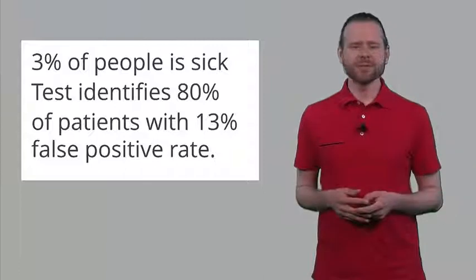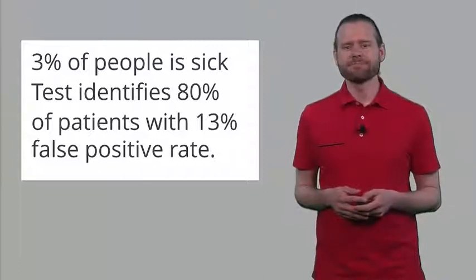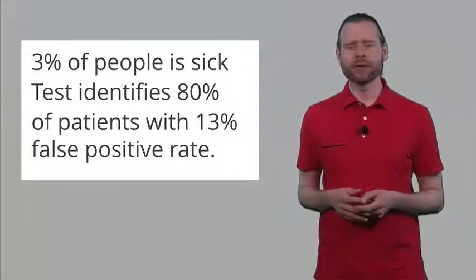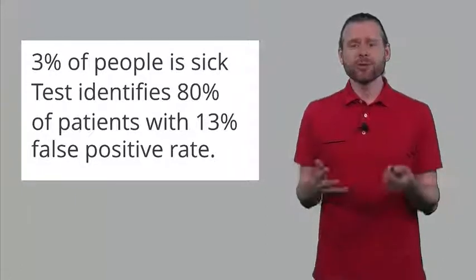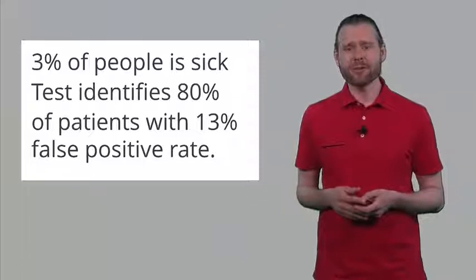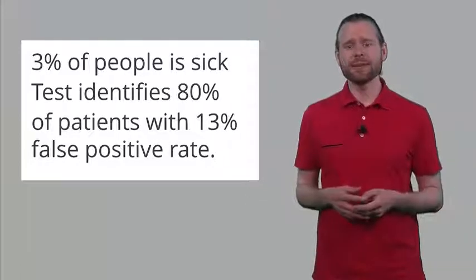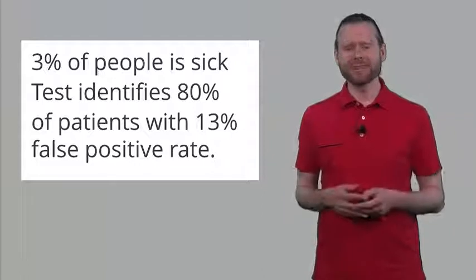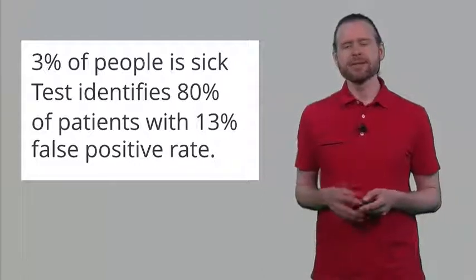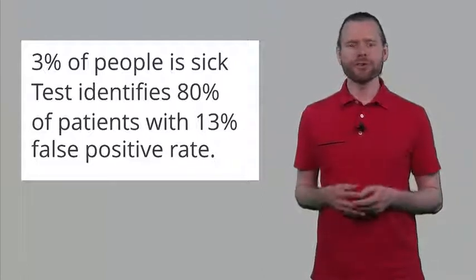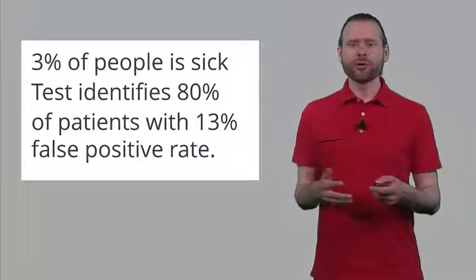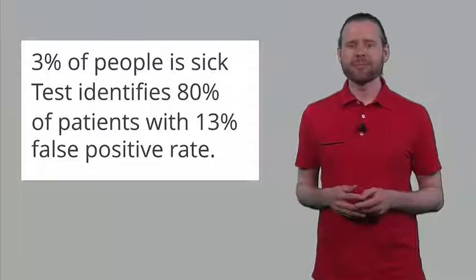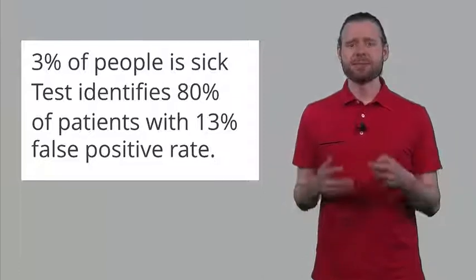This equals a statistical power of 80%. In 80% of the cases where you are sick, the test will tell you that you are actually sick. Of course we also have a type 1 error rate, and in medical science this is often a little bit higher, better safe than sorry. So in this example, there is a 13% false positive rate, meaning 13% of the people who don't have this illness will be identified by the test as maybe being sick.